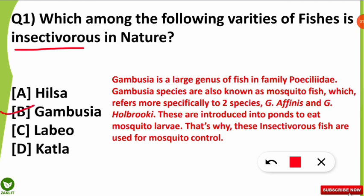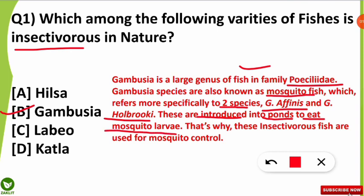Gambusia is a large genus of fish in the family Poeciliidae, in which the species are also known as mosquito fish. There are usually two important species under this genus: Gambusia affinis and Gambusia holbrookii. These are introduced into ponds to eat mosquito larvae, making them very useful in controlling the mosquito population. So they are insectivorous fish used for controlling the mosquito population.